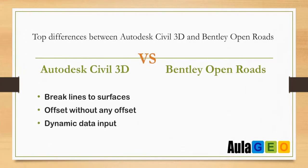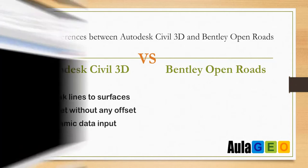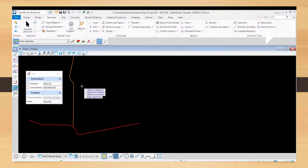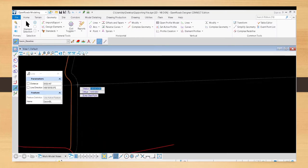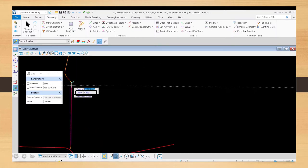OpenRoads allows you to add break lines to surfaces from a linear entity and its active profile. In Sable 3D, this is not possible unless you create a feature line from alignment or profile. Also in Sable 3D, we cannot create an offset alignment where the offset is equal to zero, which can be done in OpenRoads.